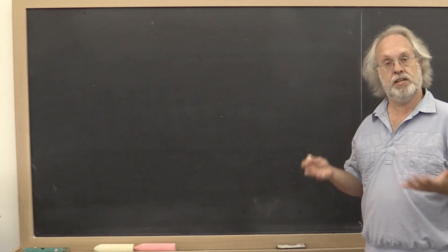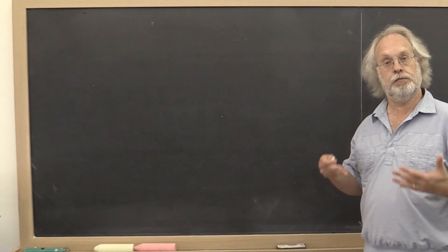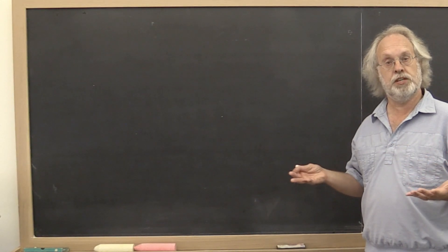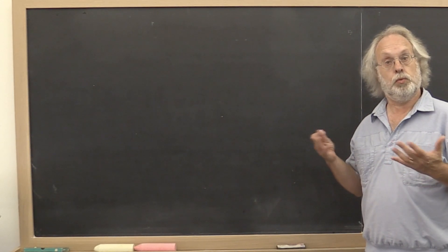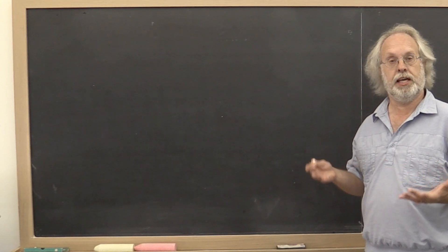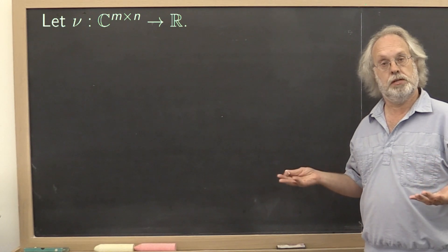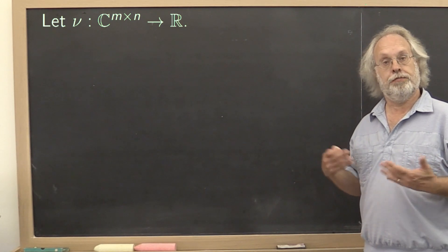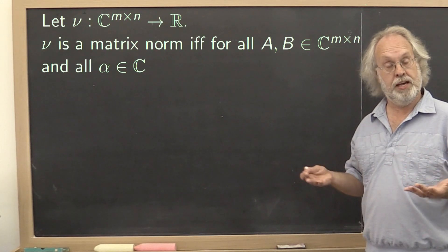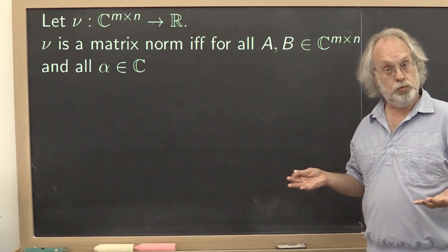Remember, a norm is just a measure of the length or magnitude of the object to which it's applied. So in this particular case, the input is an m by n matrix. Out comes a real number. And the function has to obey certain rules.